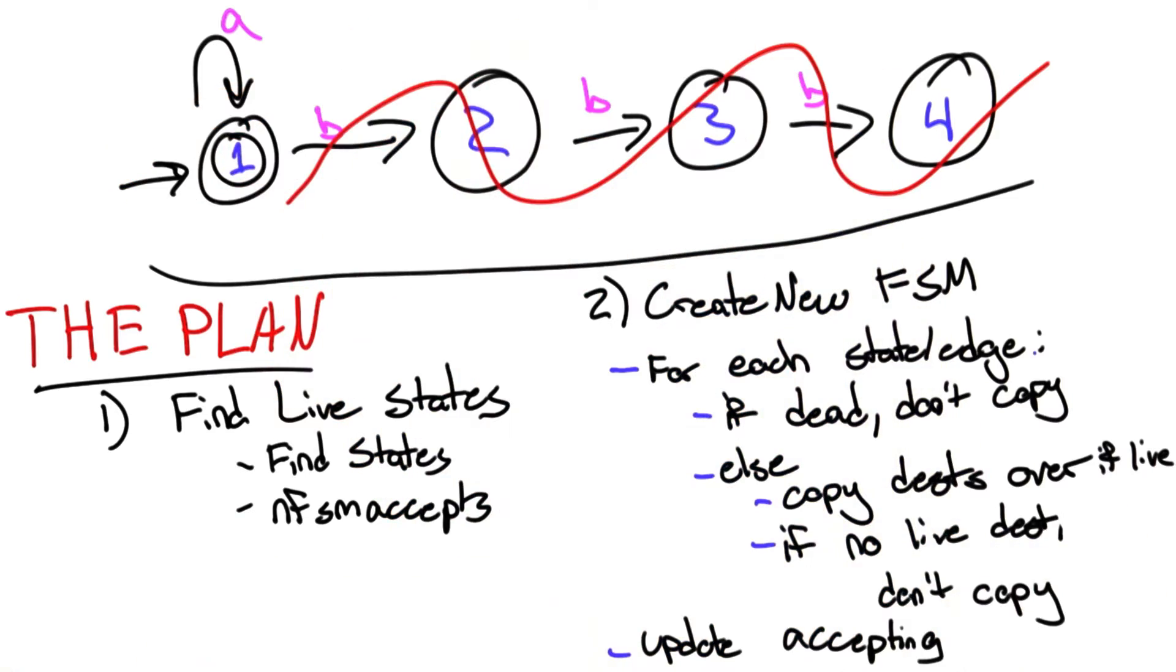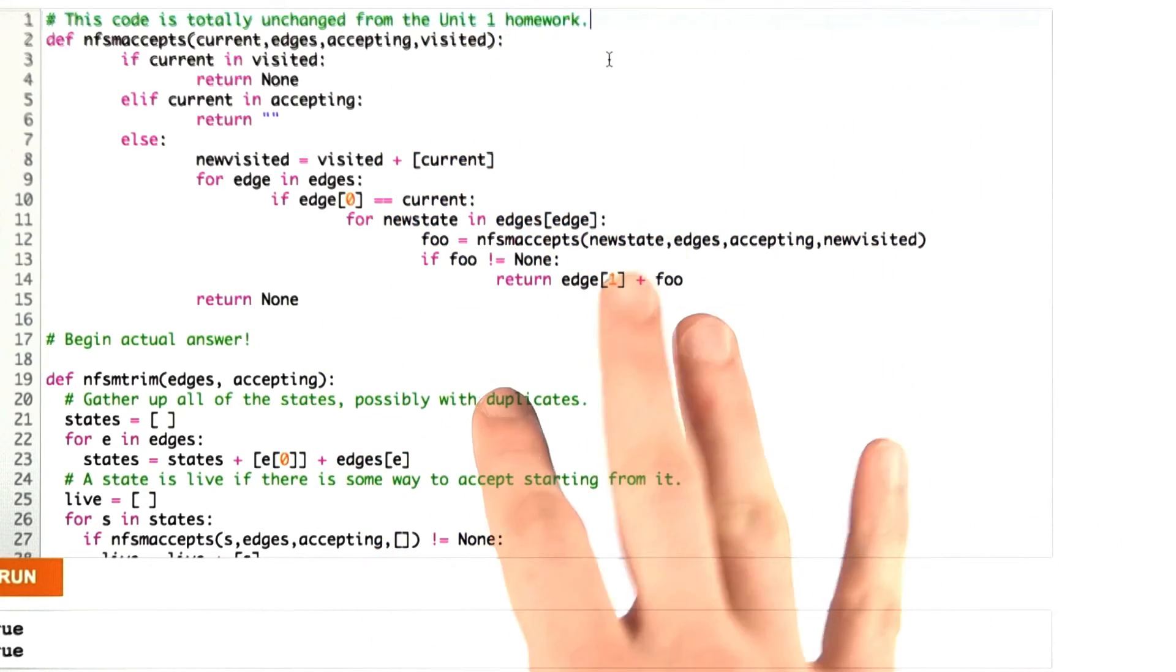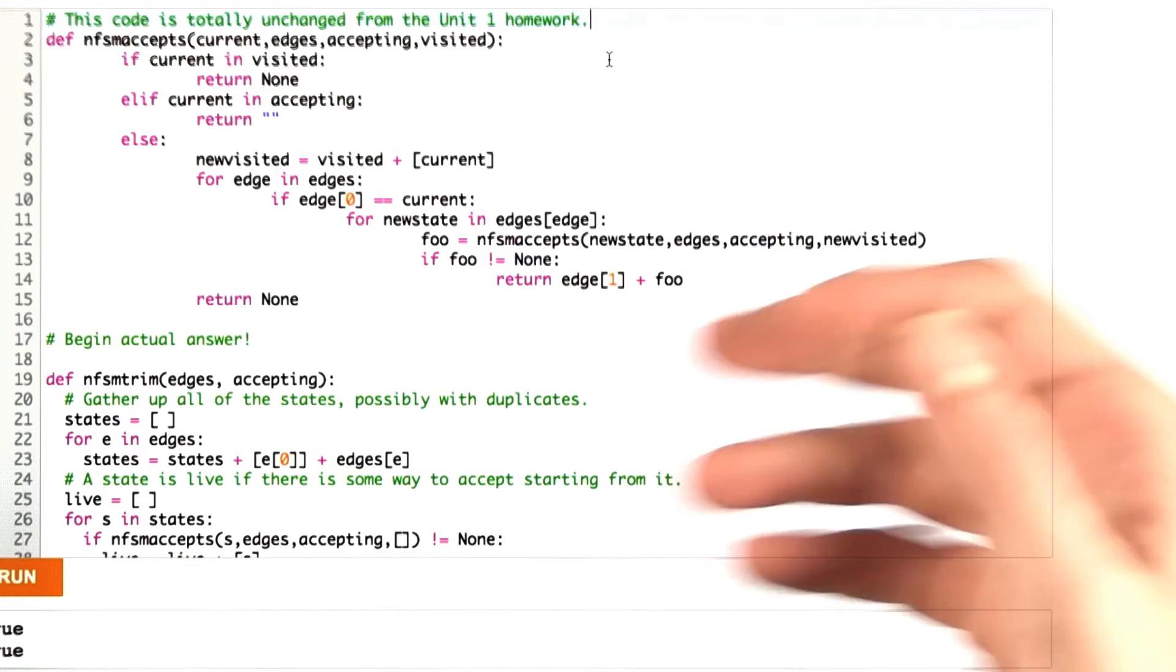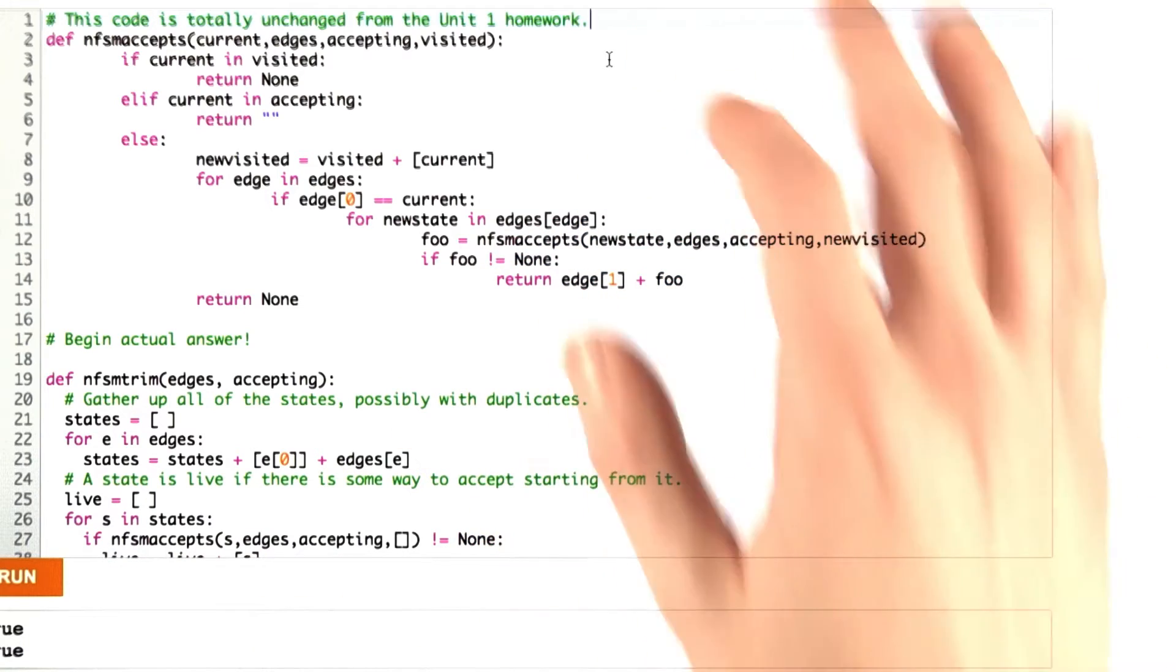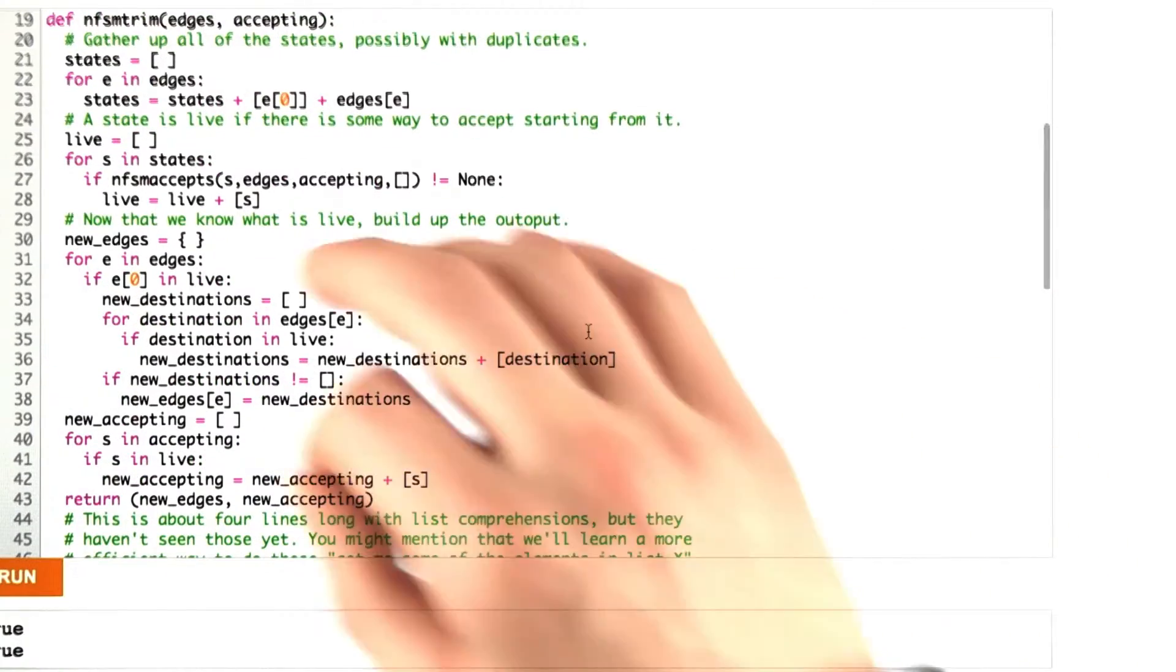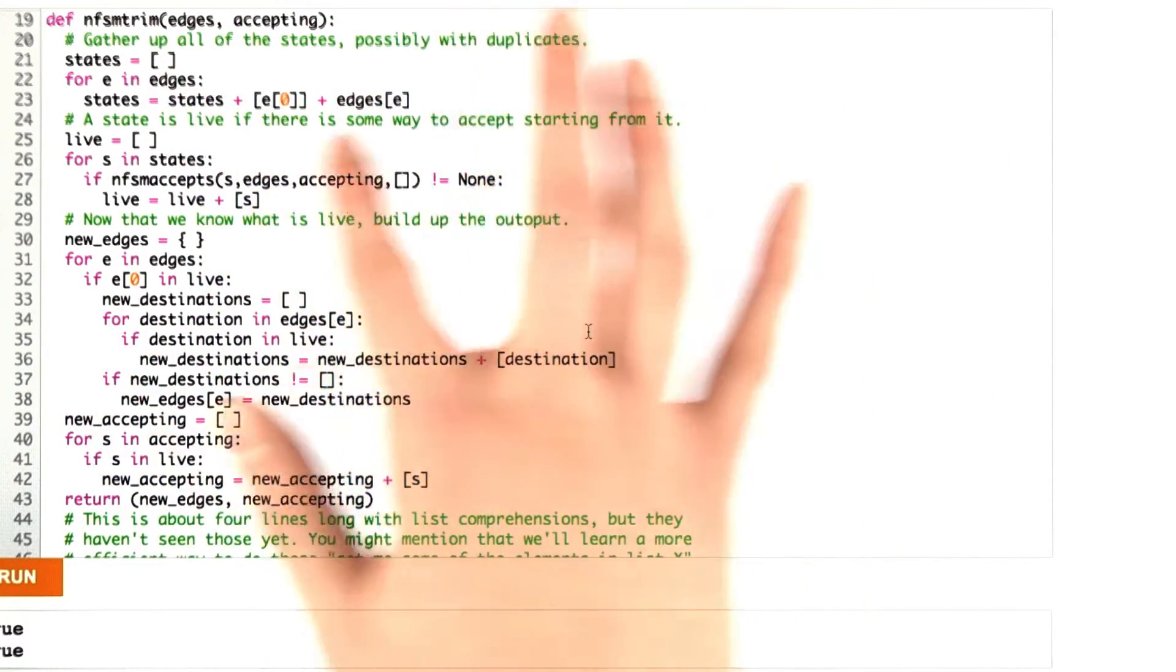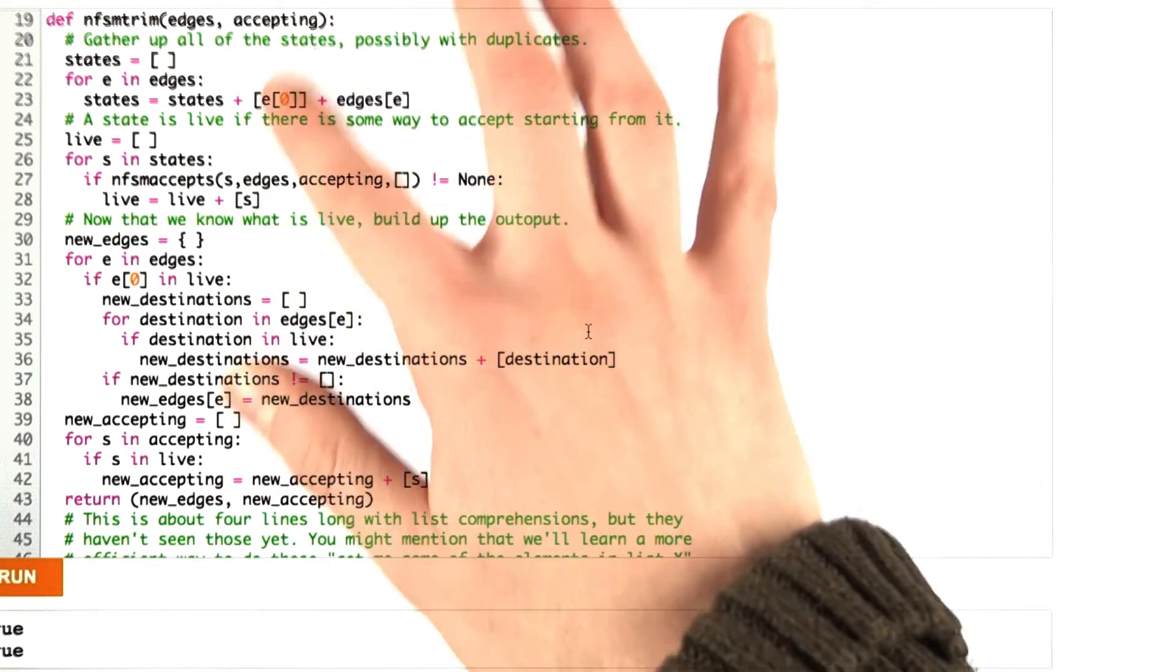So let's go to the solution. So one of the first things I did is I copied in non-deterministic finite state machine accepts directly from unit one homework. It hasn't changed a bit. Now I'm going to do my trimming of my finite state machine. So like I said in my outline, I'm going to find all the states,